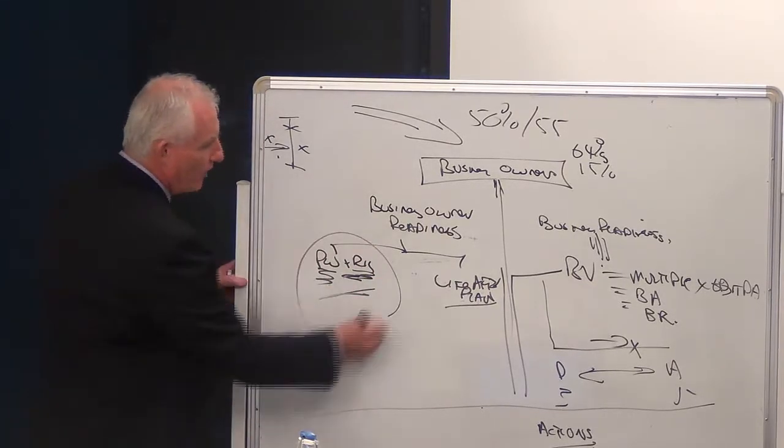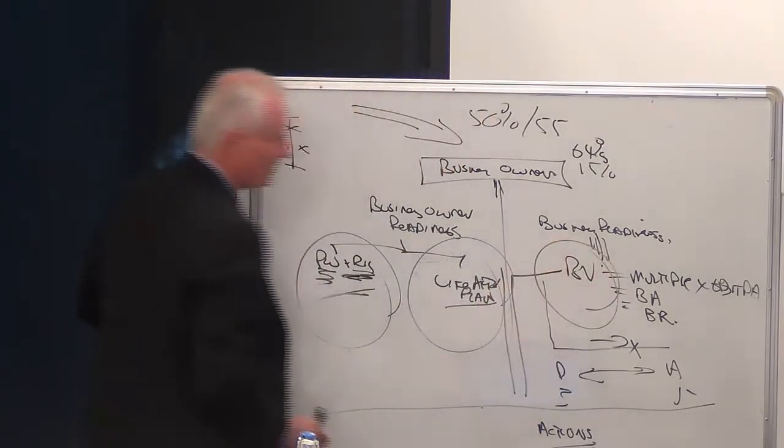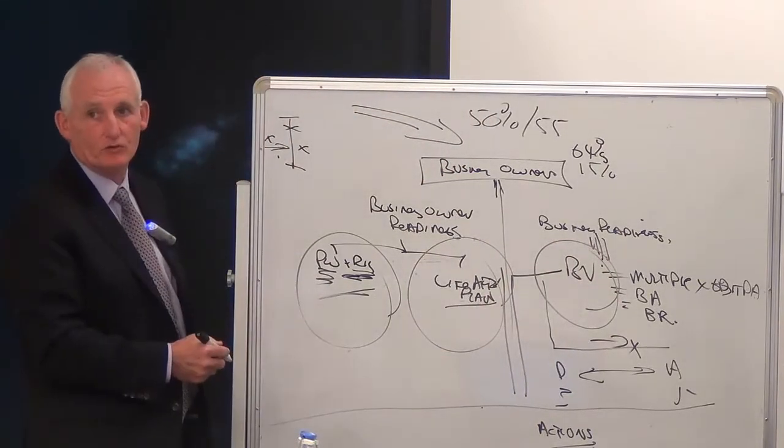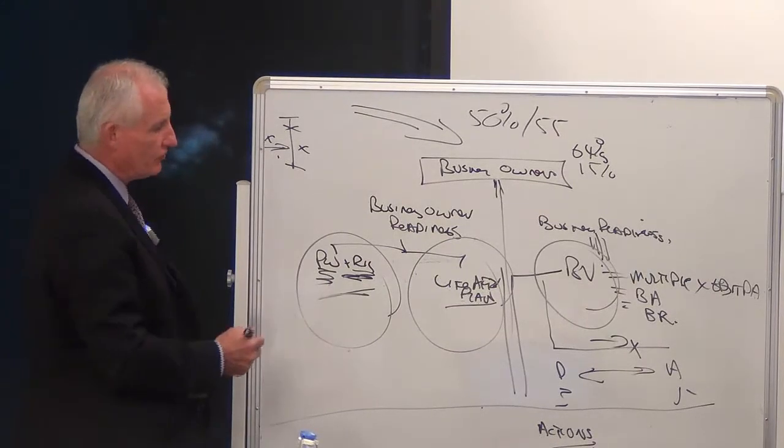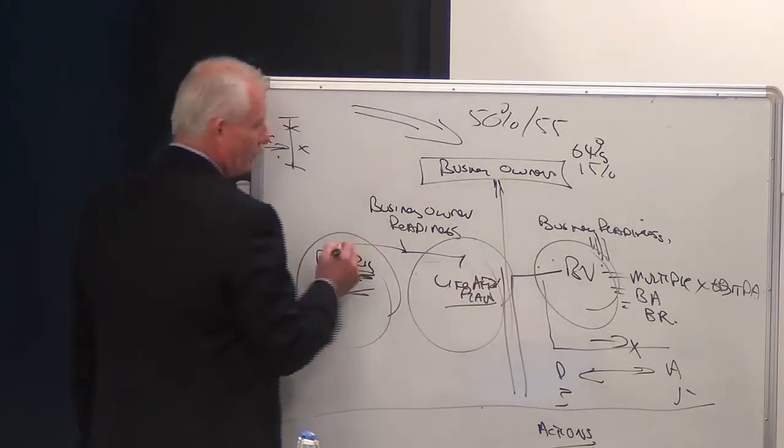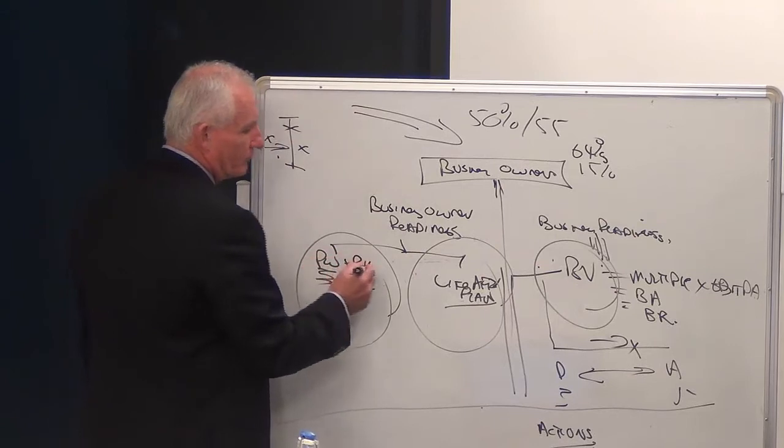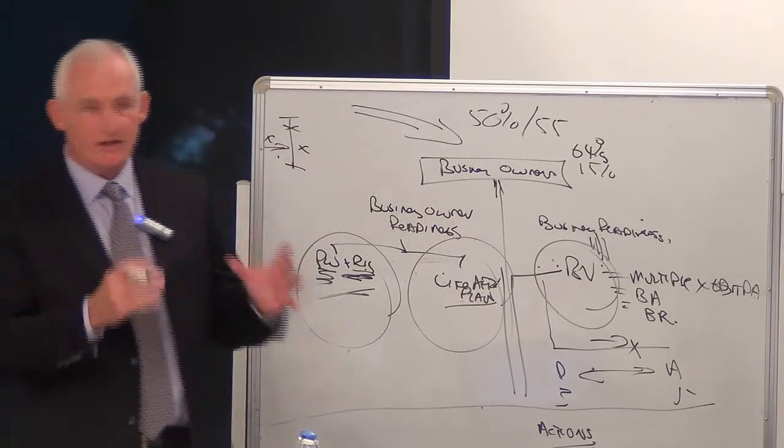The combination of one, two, three is the three legs of a stool. The guiding principle of the Exit Planning Institute is that we look at the three legs of the stool: the personal side, personal wealth and risk, life after plan, and business value. So that's the guiding area.